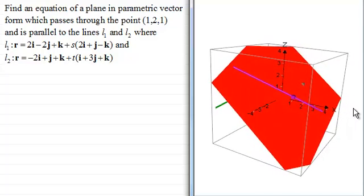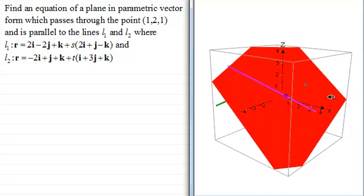Now, this particular representation that I've got here is of this problem, where we've got to find an equation of a plane in parametric vector form which passes through the point (1, 2, 1), which is this particular point here.